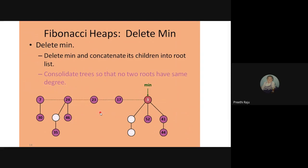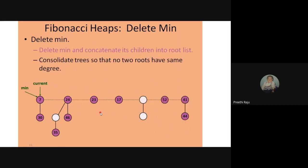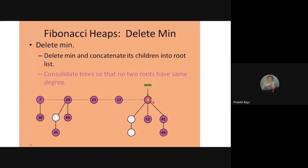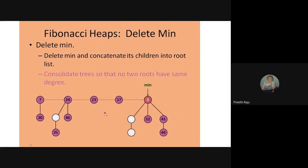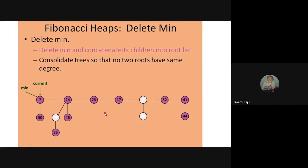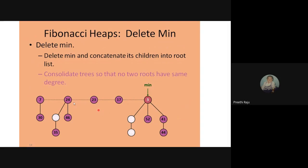To delete the minimum, remove node 3 and add all its children — 18, 52, and 41 — to the root. After deleting 3, the next minimum pointer becomes 7. Since 3 is gone, 7 is now the minimum, so we bring 7 to become the root and it becomes both the root and current pointer. Then we must consolidate so that no two roots have the same degree.